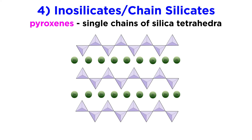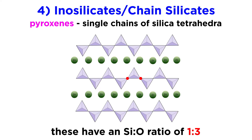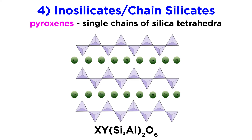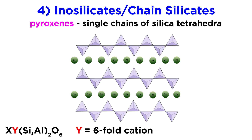Pyroxenes are composed of silica tetrahedra linked together in a zigzag pattern, where one oxygen atom in each tetrahedron is shared with the adjacent tetrahedron. They are similar to ring silicates in that each silica tetrahedron shares two of its oxygens, giving a silicon to oxygen ratio of 1 to 3. Pyroxenes have the general formula XYSiAl2O6, where the Y cation is a medium-sized cation in 6-fold coordination, and the X cation is either a 6-fold or 8-fold cation, depending on whether the crystal structure is orthorhombic or monoclinic.